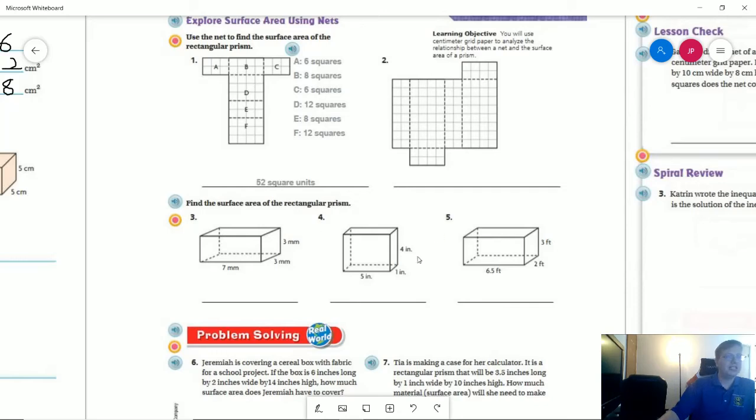For number four, you can find this one without making a net that looks like this. So two of the sides are going to be five times one. Two of the sides are going to be four times one. And two of the sides are going to be five times four. And those were the only two problems for that part.